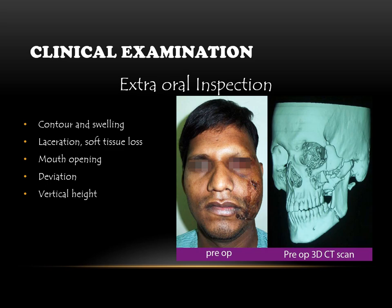Clinical examination is divided into inspection and palpation. Extraoral inspection includes: contour and swelling, lacerations and soft tissue loss, mouth opening (normal or restricted — for example, a depressed zygomatic arch fracture impinging on the coronoid process may restrict mouth opening), any deviation on mouth opening, and the vertical height of the ramus.